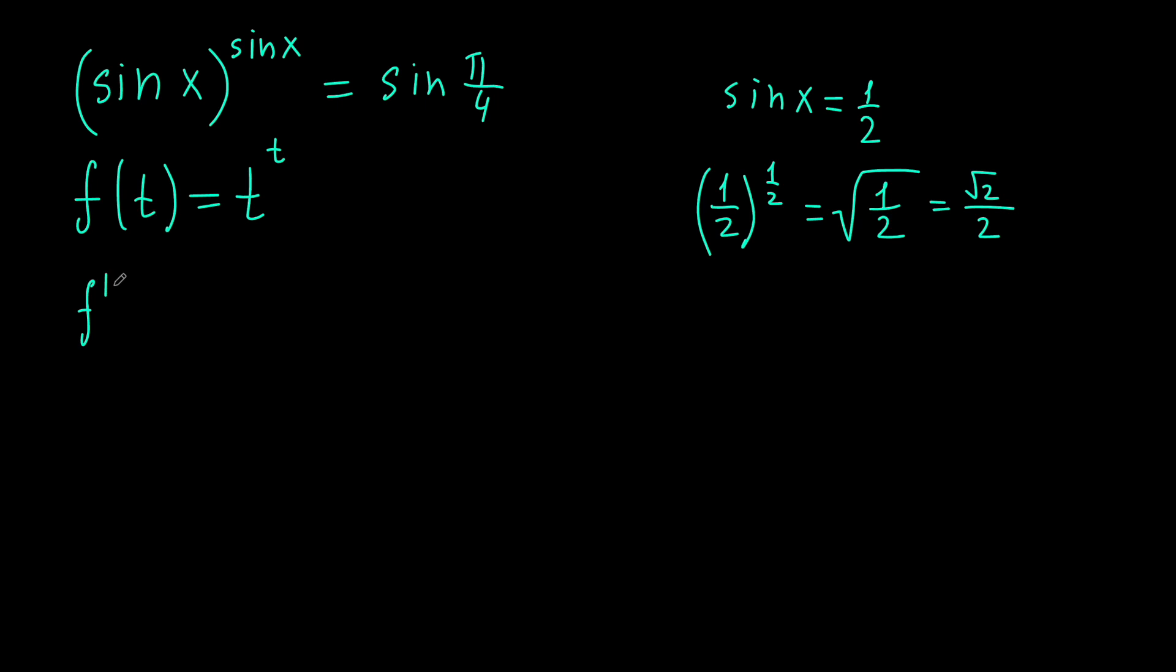We will first have to find the derivative of the function, so let's write it down. It's t to the power of t prime, and here we're going to use a little trick to find the derivative. We will use the fact that any number can be represented as e raised to the power of natural logarithm of that number.